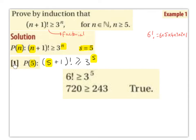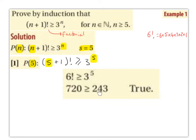Step 1: P(5) is (5+1)! ≥ 3^5. So we get 6! ≥ 3^5. 6! = 720 and 3^5 = 243. This is indeed true since 720 is greater than 243.